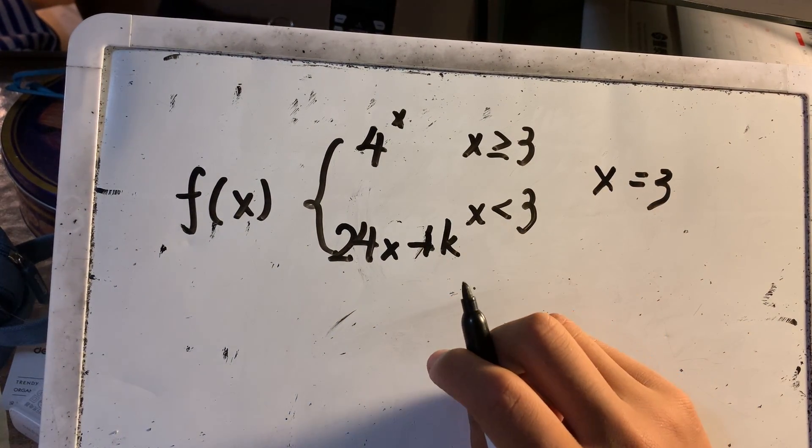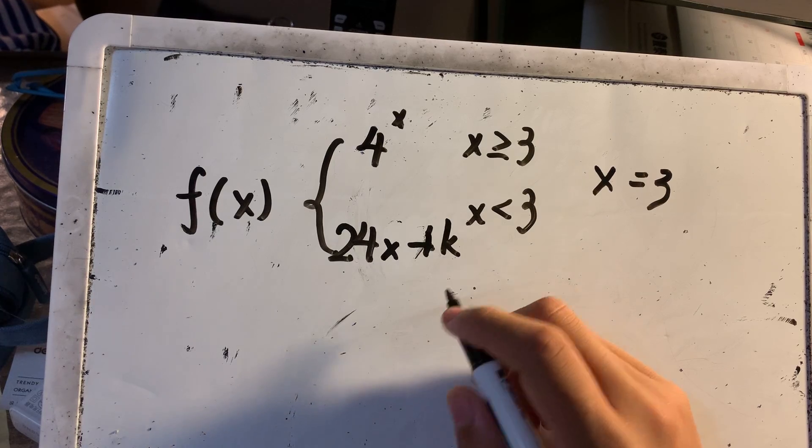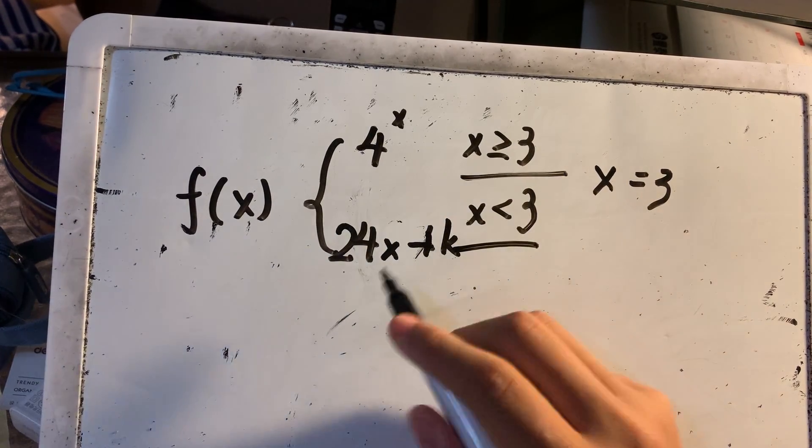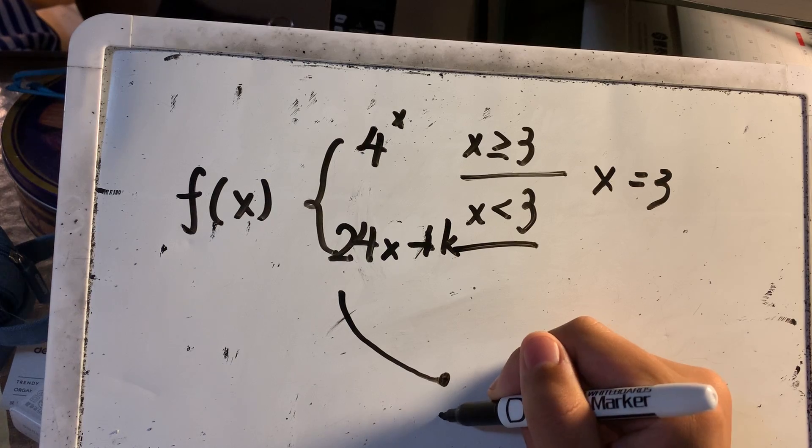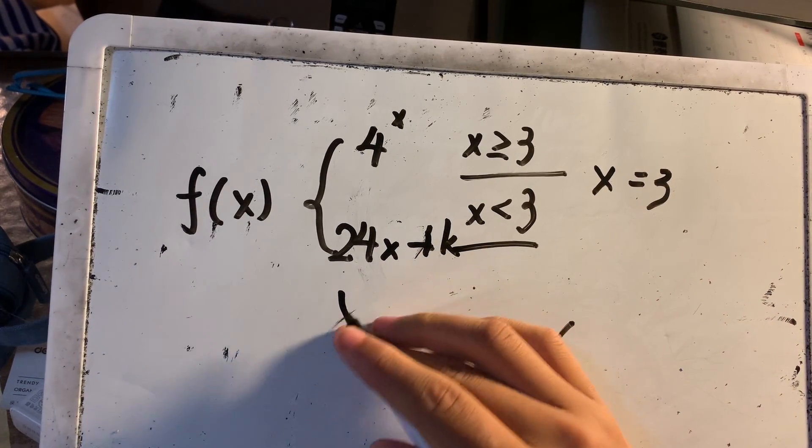To make this continuous, how do you make it continuous? We know that since x equals 3 is here, it must have a gap. So it will look like this, right?